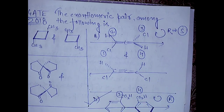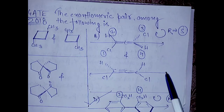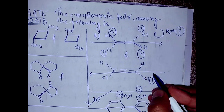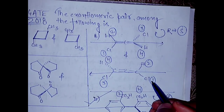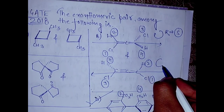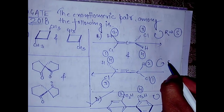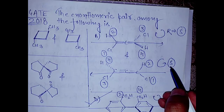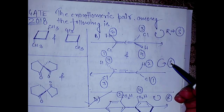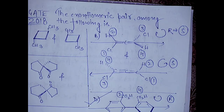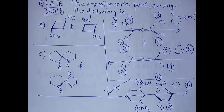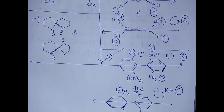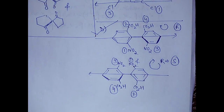Now come to the other end. GATE gave the substituents in an opposite manner to confuse students. Pass the axis from the planar side here. This is 1, this is 2, this is 3, and this is 4. So 1, 2, 3 is anti-clockwise — that is S configuration. The fourth group is below the plane, so the configuration is retained. This end is also S. Both centers are S, so they are identical — not enantiomers. D is the correct answer. Thank you and bye.